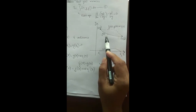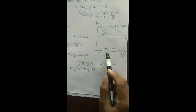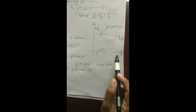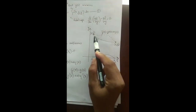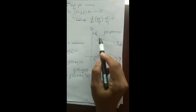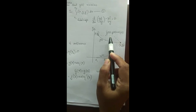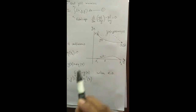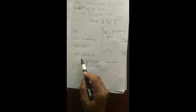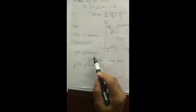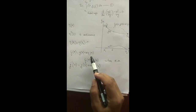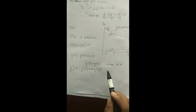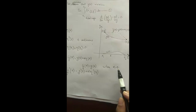Here y(x) is the minimizing function. η(x) is a curve such that η(x1) = η(x2) = 0, and ȳ(x) = y(x) + α·η(x) is a representative of the one-parameter family. For each choice of the function η(x), the minimizing function y(x) belongs to the family and corresponds to the parameter value α = 0.